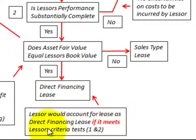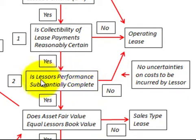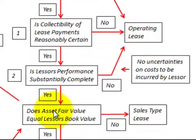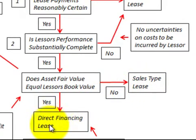To summarize the lessor's classification: the lease must meet the lessor's two additional criteria — collectability of lease payments reasonably certain, and lessor's performance substantially complete. If either is answered no, it becomes an operating lease. Then, does the asset's fair market value equal the lessor's book value? If no, it becomes a sales-type lease; if yes, it becomes a direct financing lease. In this case, it is a direct financing lease.